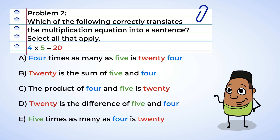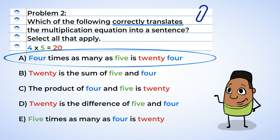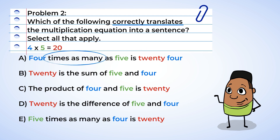Which of the following correctly translates the multiplication equation into a sentence? The equation is four times five equals 20. Let's begin by looking at all of the options. Option A: four times as many as five is 24. We know that times as many represents multiplication, so we get four times five. The word is can be translated into an equal sign, so we get four times five equals 24. Wait — four multiplied by five equals 20, not 24. That was a trick question. Option A is not correct.